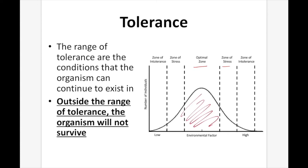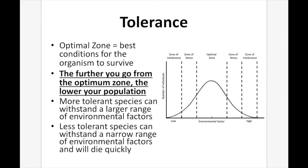You can see our population is highest in the optimal zone and lowest toward the zone of intolerance, until it reaches zero outside that zone. The optimal zone represents the best conditions for the organism to survive — that's when you'll have the highest population. The further you go from the optimal zone, the lower the population. More tolerant species can withstand a larger range of environmental factors, while less tolerant species have a more narrow range. A hardy species might have a flatter, wider graph, while a less hardy species has a much narrower curve.